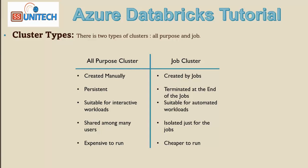The all-purpose cluster can be shared among many users. But in the case of the job cluster, since it is created when a job starts executing, it is isolated just for that job. Finally, the all-purpose cluster is more expensive when compared to the job cluster. So these are the two types of clusters available and their key differences.